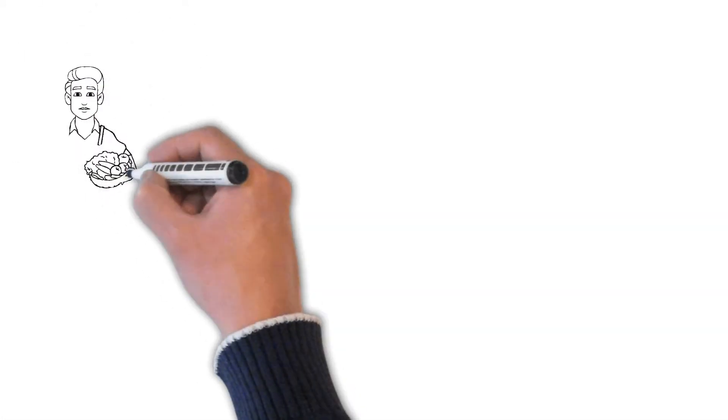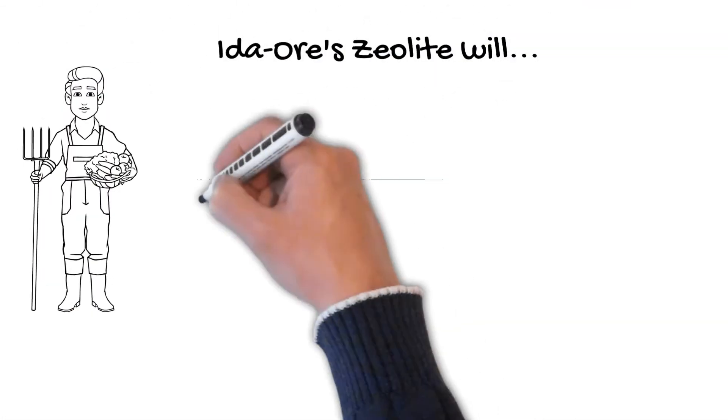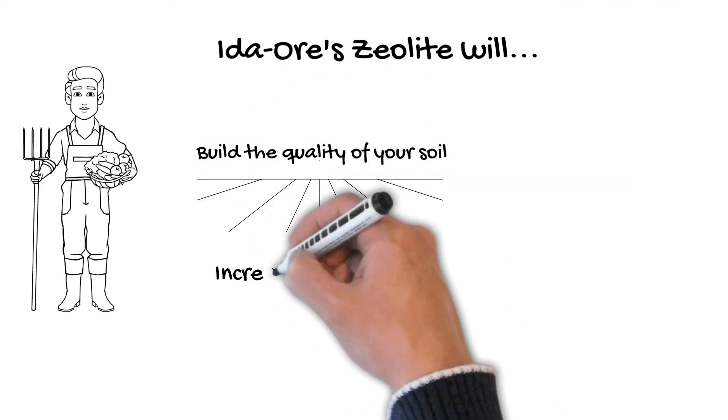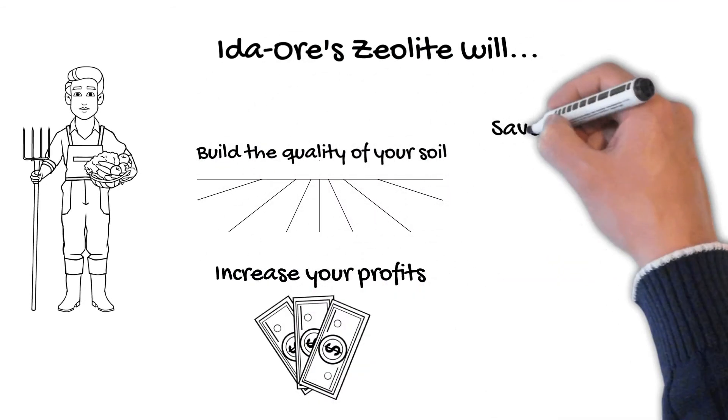Not to mention, now Bob is building up his soil, increasing his profits, and saving his time using Idaho's zeolite.